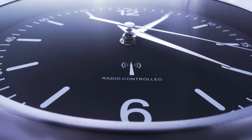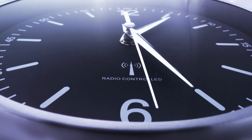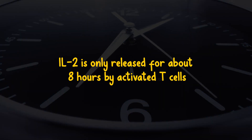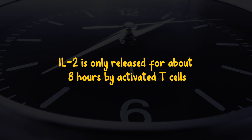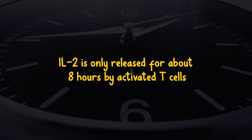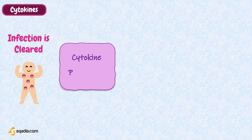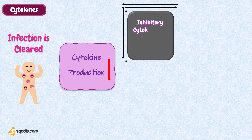Since they are secreted in response to infection, the bulk of cytokines are only fleetingly secreted. For instance, interleukin-2 is only released for about 8 hours by activated T cells. A longer secretion would result in excessive immune system activation that is unwarranted and possibly dangerous. Normally after an infection is treated, cytokine production falls. Additionally, to prevent an immune response from lingering, inhibitory cytokines like interleukin-10 and transforming growth factor beta may be released at the end of an immune response.